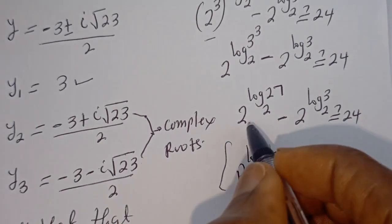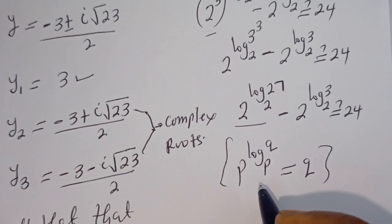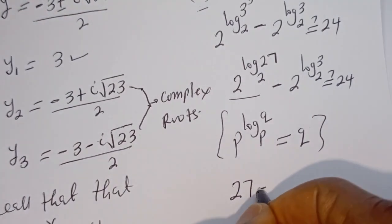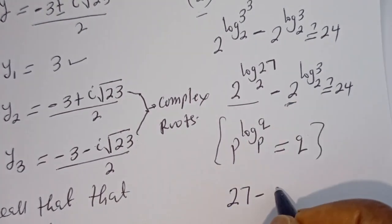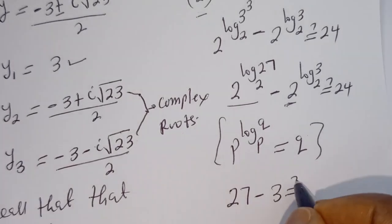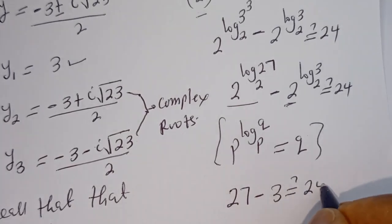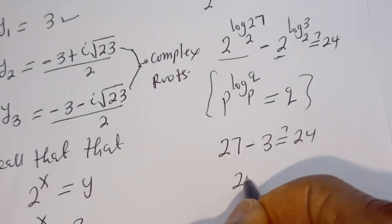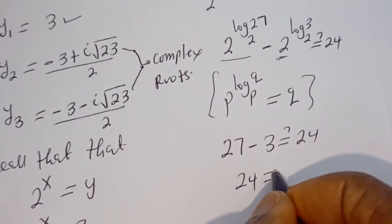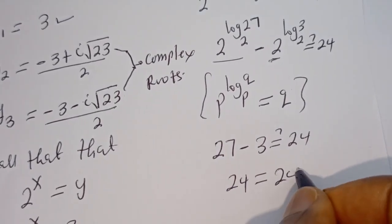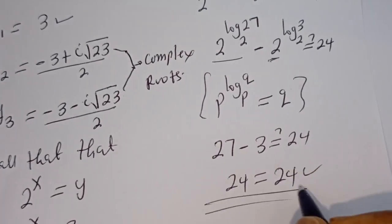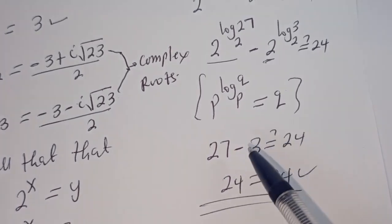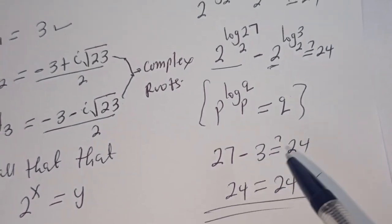Therefore all of this gives 27 minus 3, which must equal 24. Now 27 minus 3 equals 24, which is 24 — which is true! I hope you enjoyed the video. Thank you for watching. Please don't forget to like, share, comment, and subscribe to my channel. Bye.